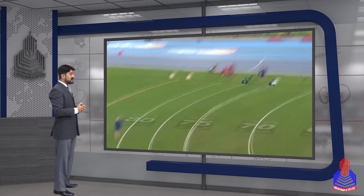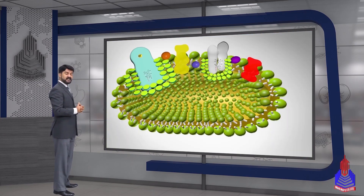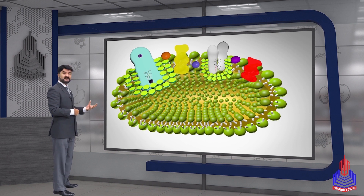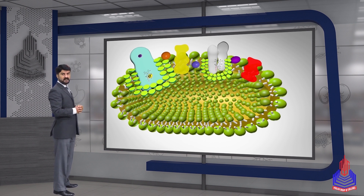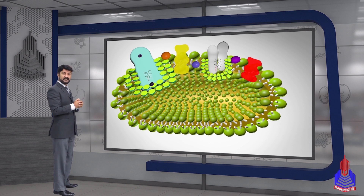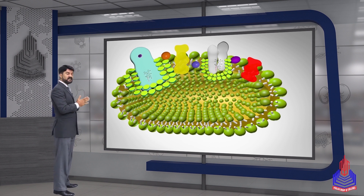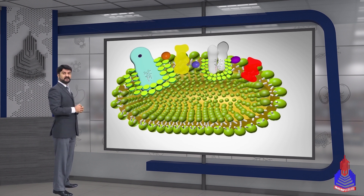Now we will see how the primary electron acceptor is receiving the electron. Remember, all these things are embedded in the thylakoid membrane.